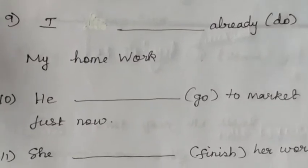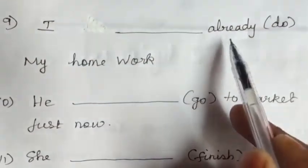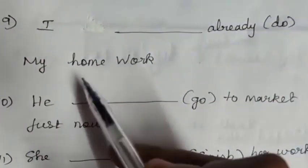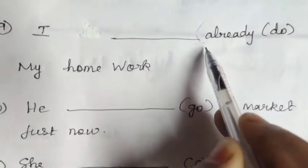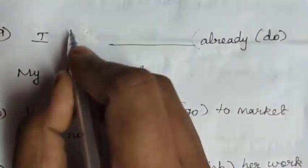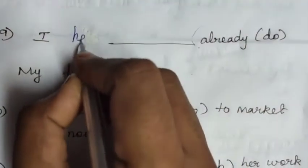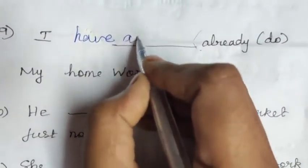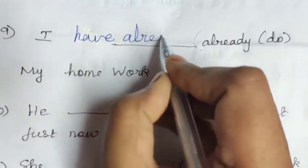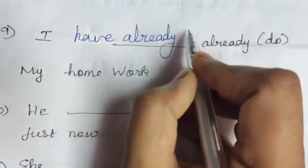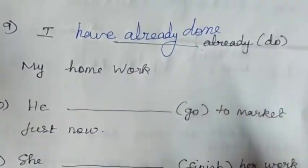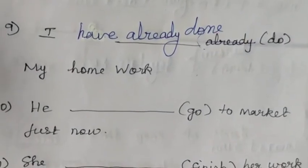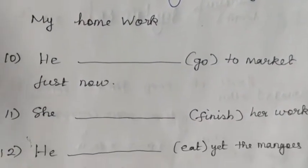Ninth: 'I dash already do my homework.' 'Already' is the clue word of present perfect tense. 'I' takes 'have'. Do-did-done; verb 3 is 'done'. 'Already' goes in the middle. Answer: 'I have already done my homework.'